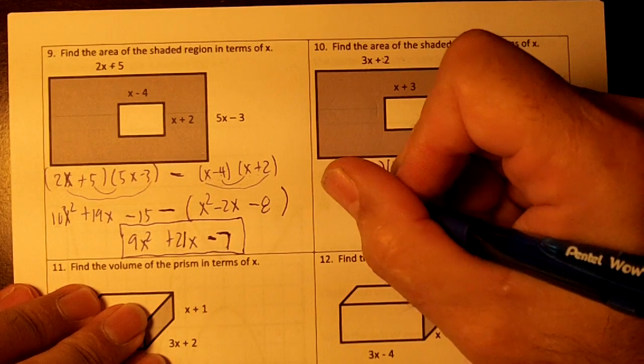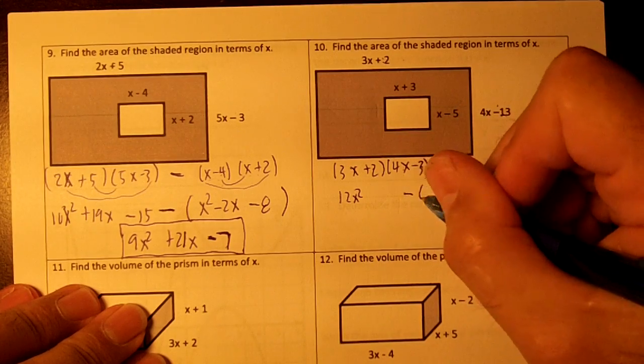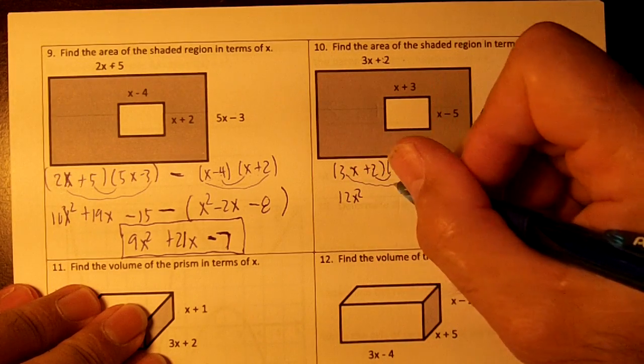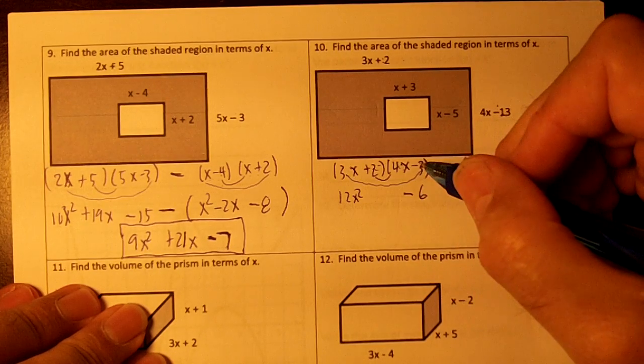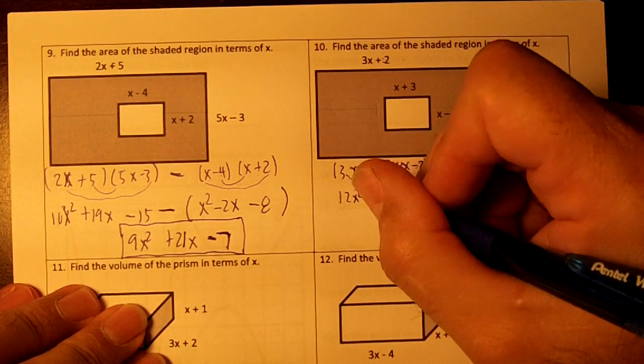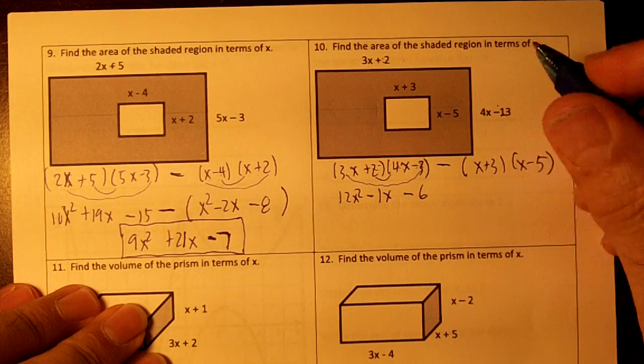3x times 4x is 12x squared. 2 times negative 3 is a negative 6. Draw your arches. 2 times 4 is 8. 3 times negative 3 is negative 9. Negative 9 plus 8 is a negative 1x. You've got to be able to do this in your brain without writing any of that down by now.